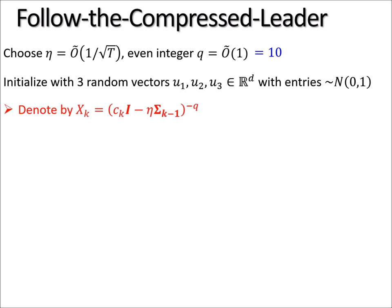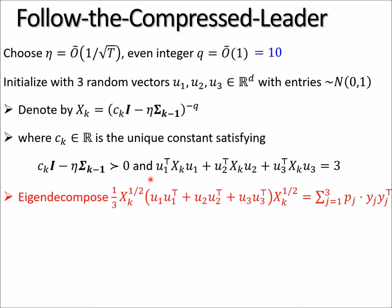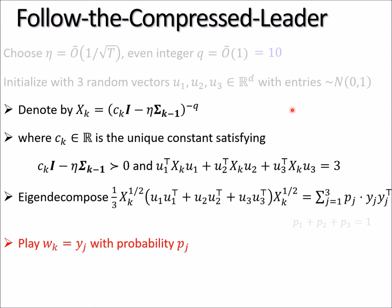Now in each iteration k, the algorithm denotes by X_k the following matrix: a constant times identity minus learning rate times the partial sum, then raised to the power -q. Here this constant c_k is defined to be the unique constant such that not only the matrix we want to invert is positive definite, meaning all eigenvalues are strictly positive, but also the summation of the following three quadratic quantities: u_1^T X_k u_1, u_2^T X_k u_2, u_3^T X_k u_3, the summation of them equals roughly 3. There exists a unique constant. Now finally, you eigendecompose the following rank 3 matrix into three orthogonal eigenvectors, and all three values of p will sum to 1. And finally, you play y_j with probability p_j.